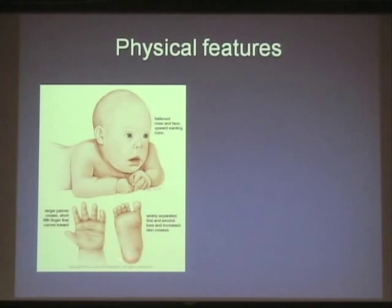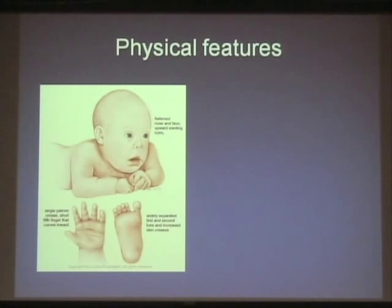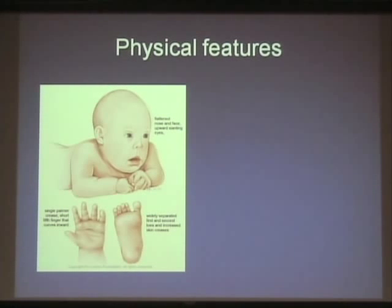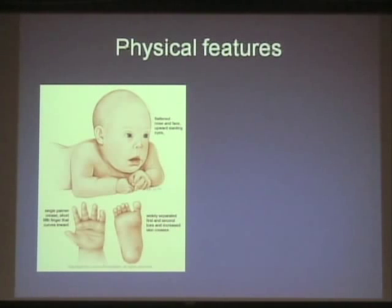Looking at the feet, there's often a larger space between the first and second toe — called the sandal gap. I worked with a geneticist who, when called to the nursery, would say 'just show me their footprint sheet,' and could identify Down syndrome from that alone. It's quite recognizable, though certainly not diagnostic of Down syndrome by itself.